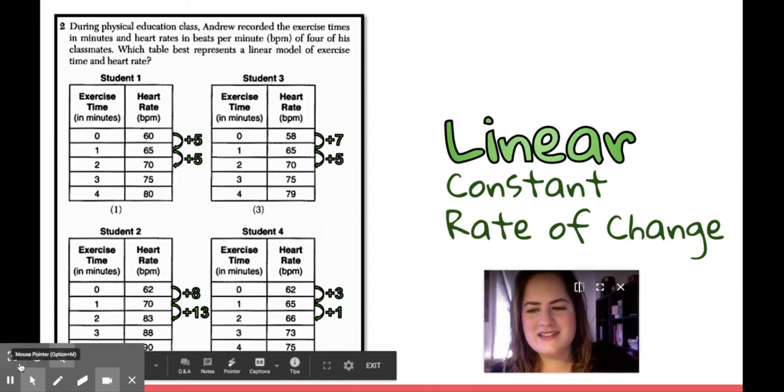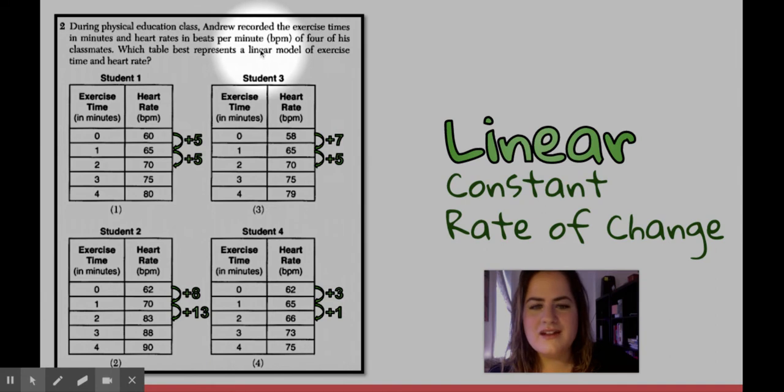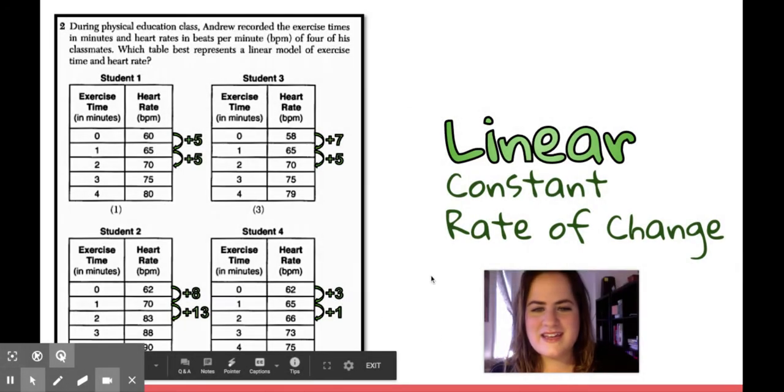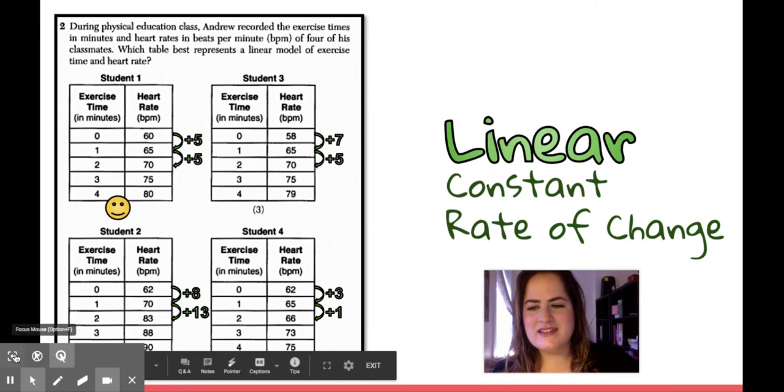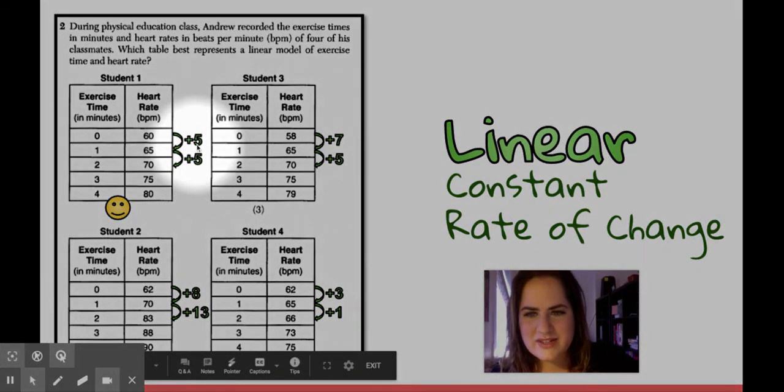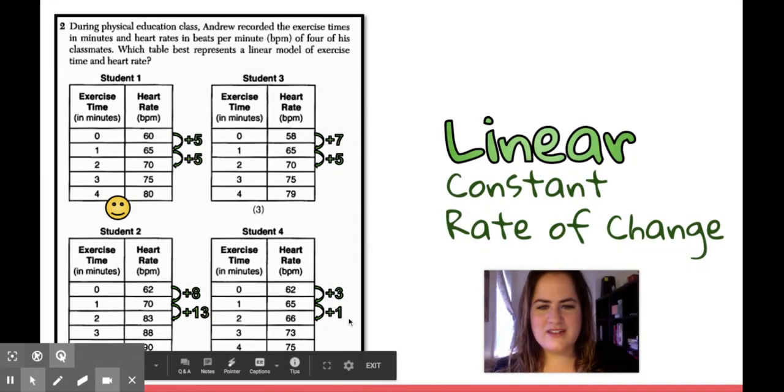Let's do another one. This one looks like a lot of complicated words, but I just need that word right there. Linear. Which one of these is linear? I even gave you the rate of change. Take a second. Pick a choice. Which one is linear? Okay, if you said choice one, you're correct. That's the only one that had a constant rate of change. This was different. This was different. And this was different. Good job.